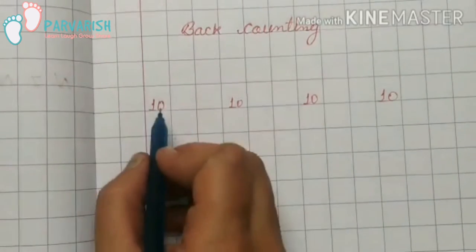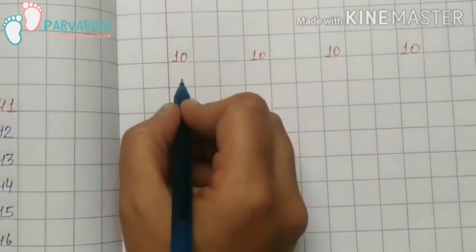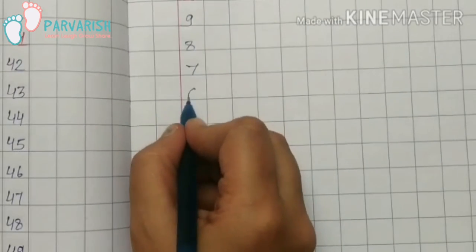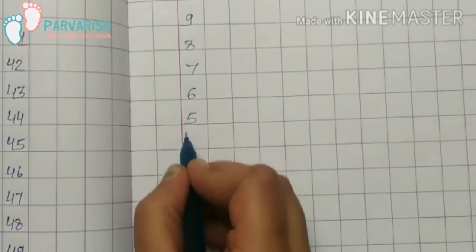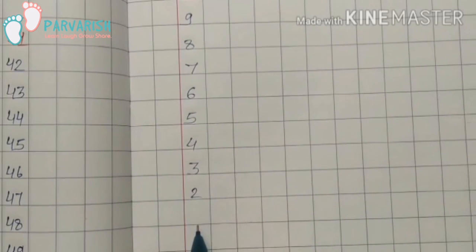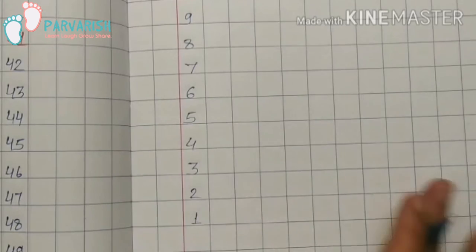10, 9, 8, 7, 6, 5, 4, 3, 2, 1. So students, you have to practice.